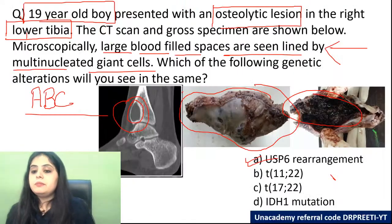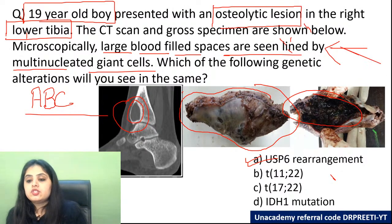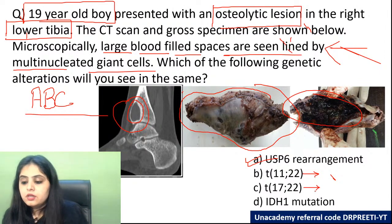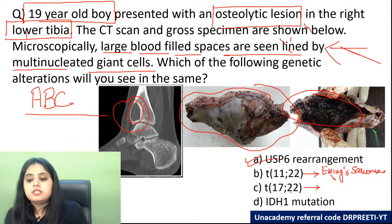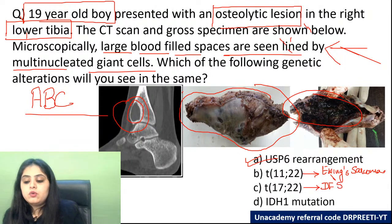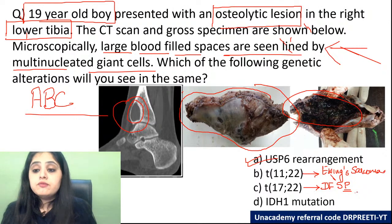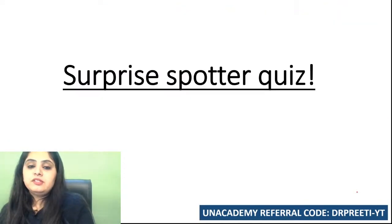Quick revision on translocations: t(11;22) = Ewing sarcoma; t(17;22) = dermatofibrosarcoma protuberans (DFSP). For those who couldn't recall, revisit the tricky tables session and your mnemonics — once revised, you will not forget these translocations. With that, this case is complete.